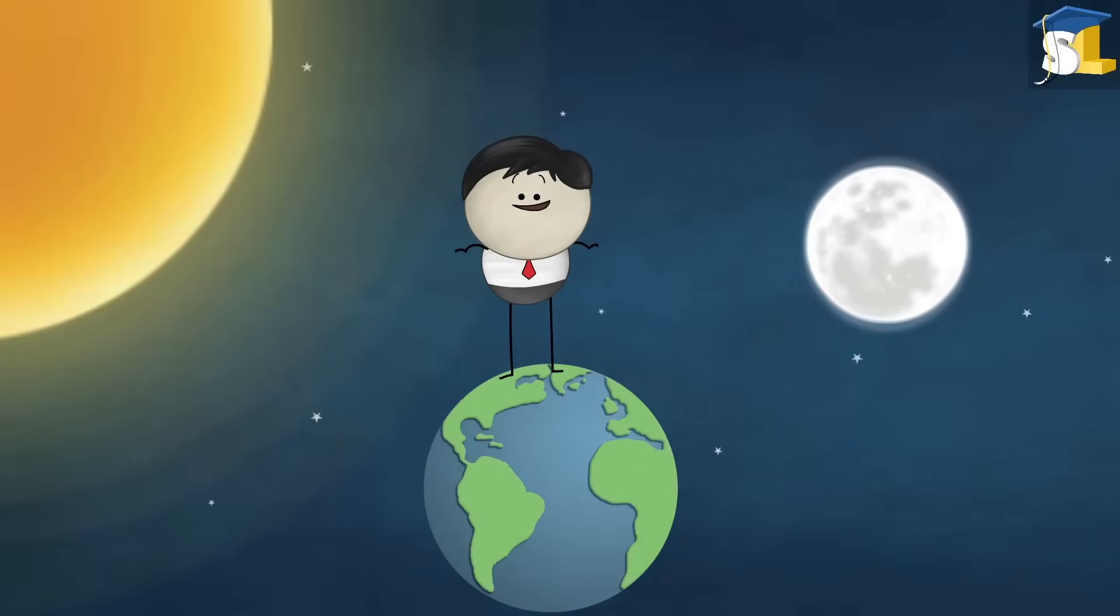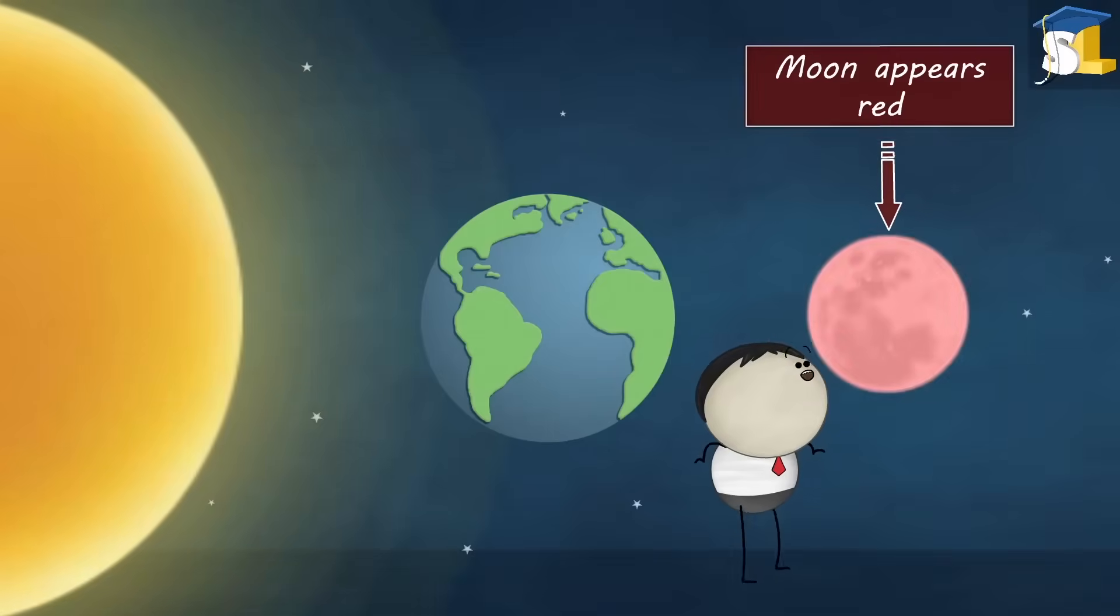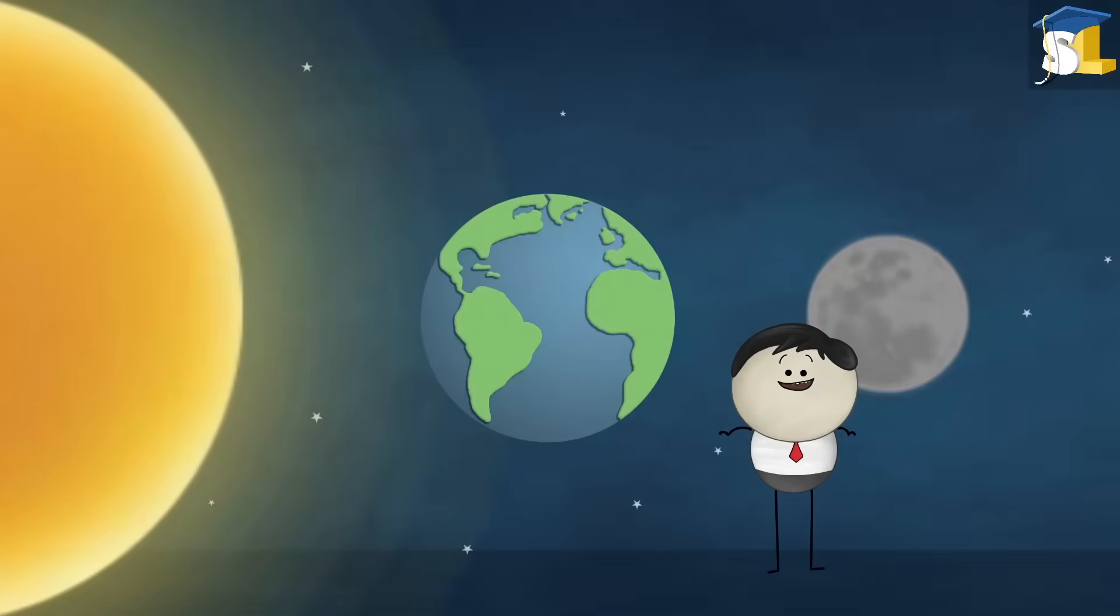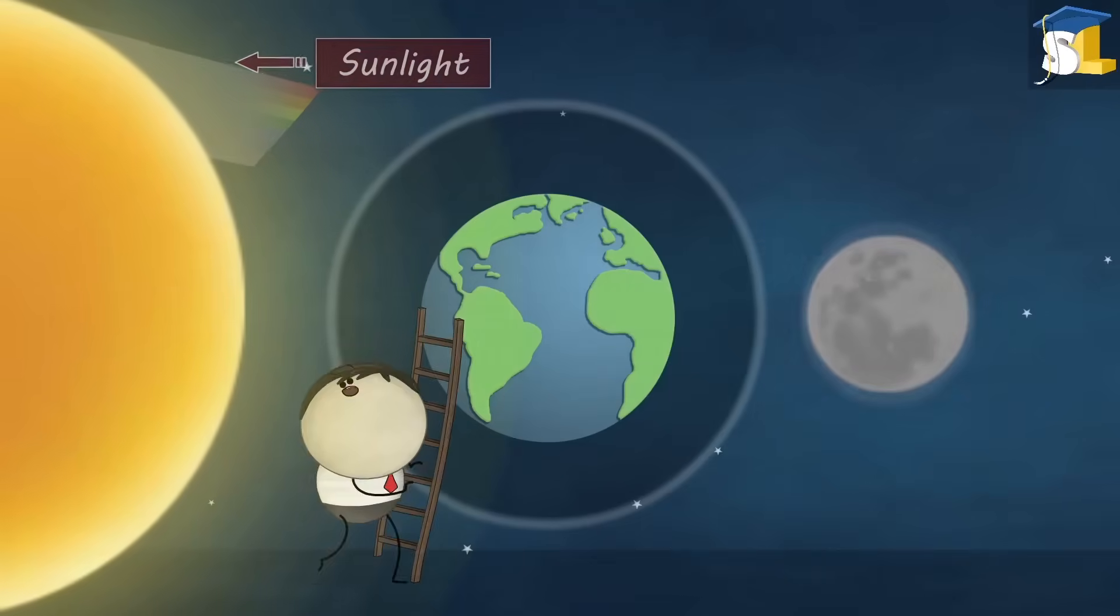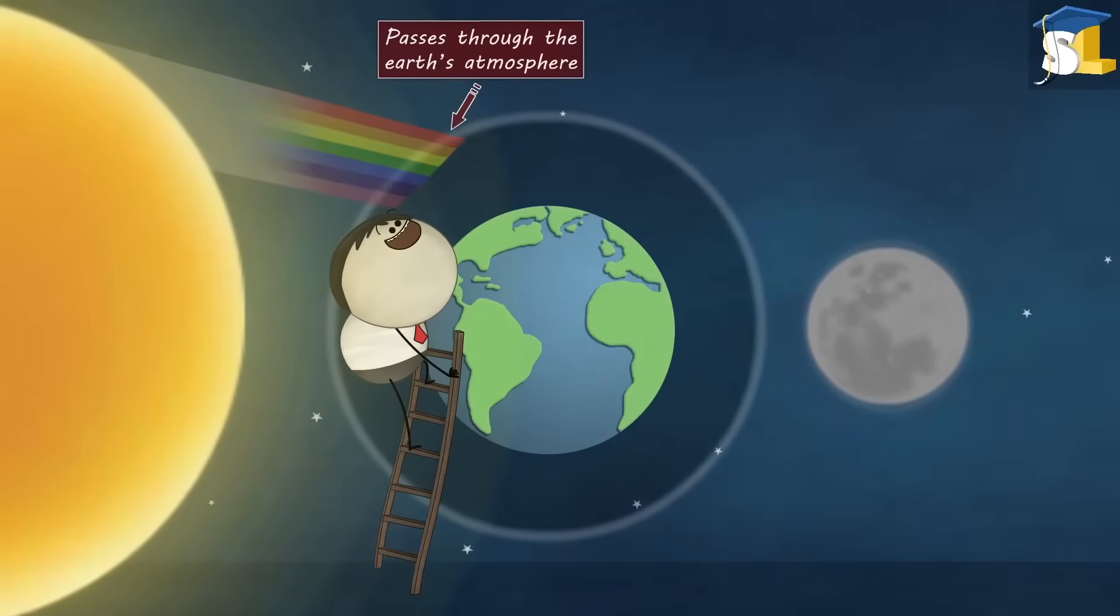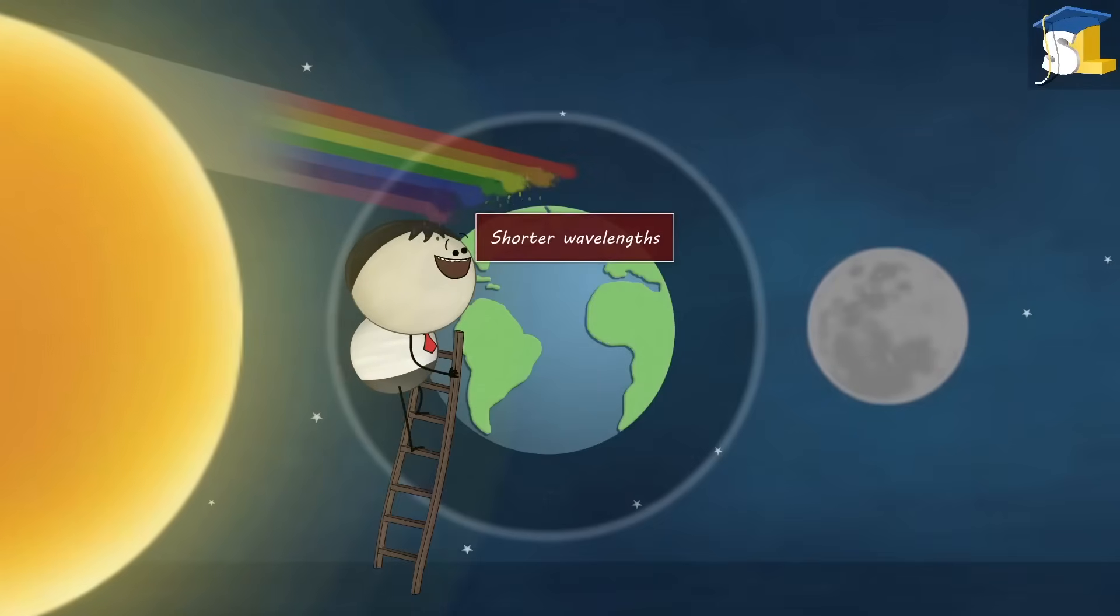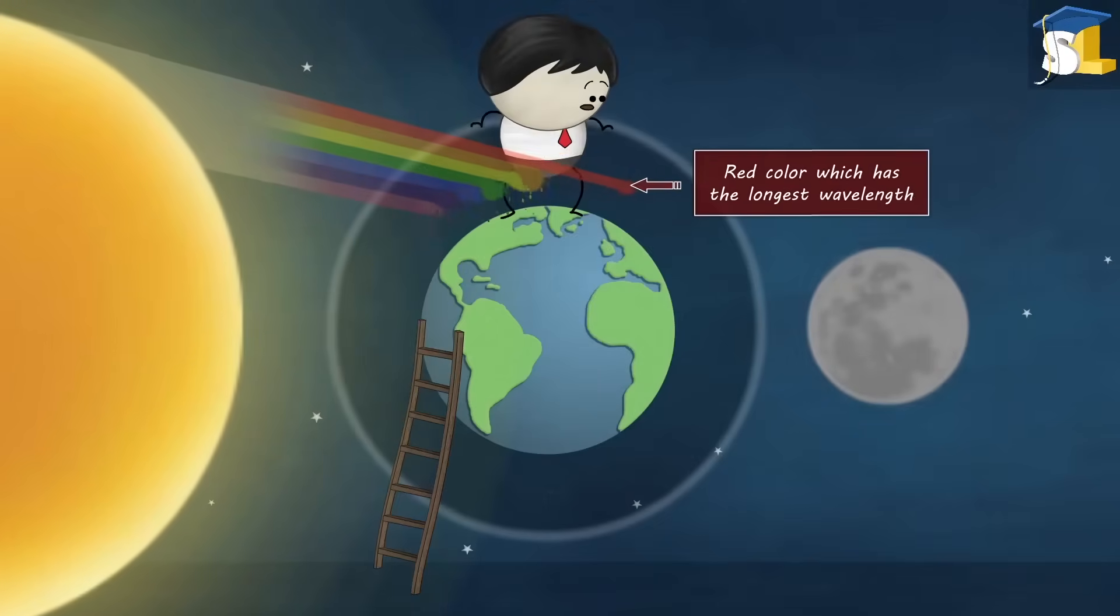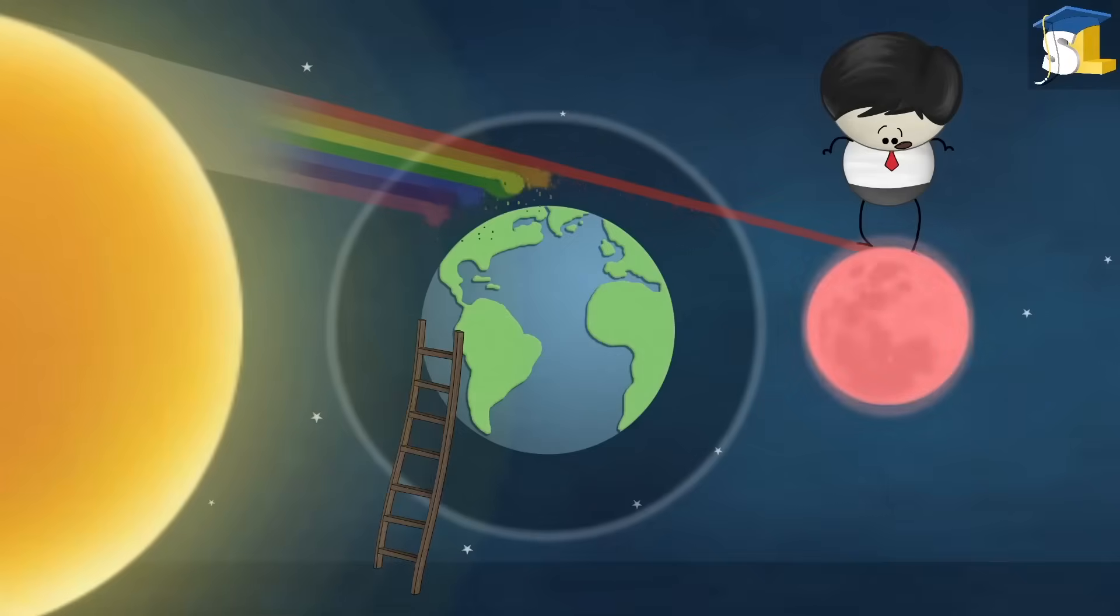This happens because of the earth's atmosphere. When the sunlight coming from the sun passes through the earth's atmosphere, the earth's atmosphere scatters the colors of the sunlight having shorter wavelengths. However, red color which has the longest wavelength is least scattered. Hence, it makes its way to the moon, making it look red.